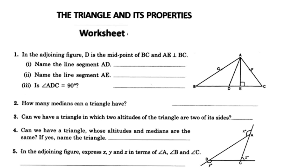In the adjoining figure, D is the midpoint of BC and A is perpendicular to BC. Name the lines that meet AD. D is the midpoint of BC — this is point D.